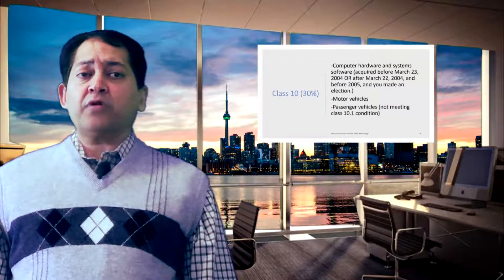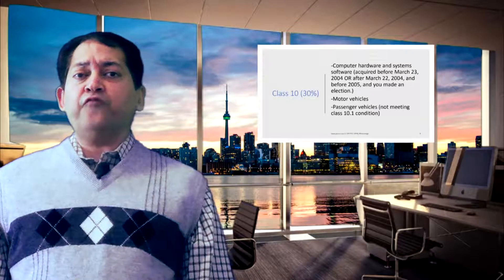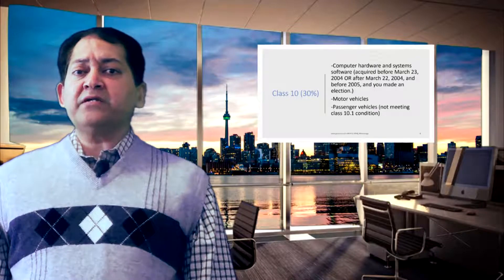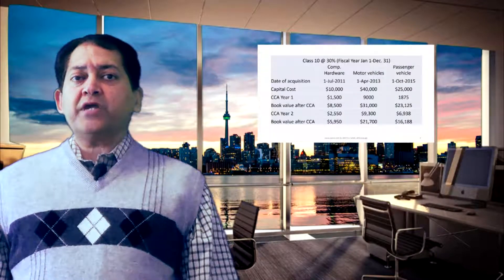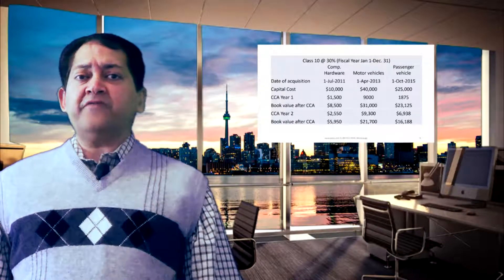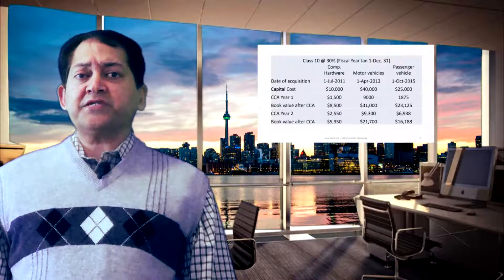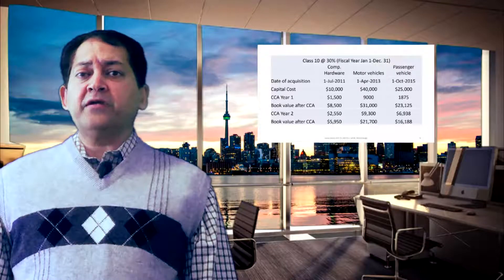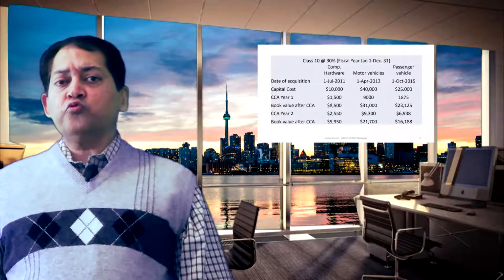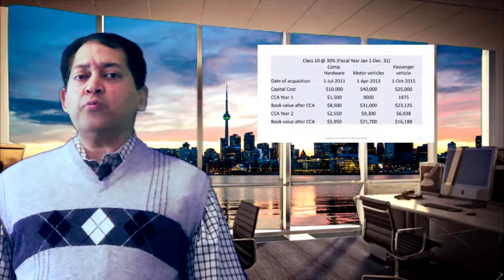Now we look at class 10 assets, for which the CCA rate is 30%. This includes computer hardware and systems software if acquired before March 23, 2004, or after March 22, 2004 and before 2005. It also includes motor vehicles and passenger vehicles that do not meet the class 10.1 condition. We assume the fiscal year runs January 1st to December 31st, with three asset types: computer hardware, motor vehicle, and passenger vehicle. CCA for year 1 is calculated for 6 months for computer hardware, 9 months for motor vehicles, and 3 months for the passenger vehicle, giving us the book value after the first year CCA. For year 2, full-year CCA is calculated for all three assets.